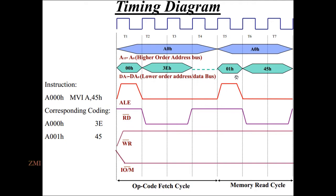Then we will score T4 and T5. The first point we will score is 0 and 1. T5 is the same as T2, and T3 is the same as T6 and T7.